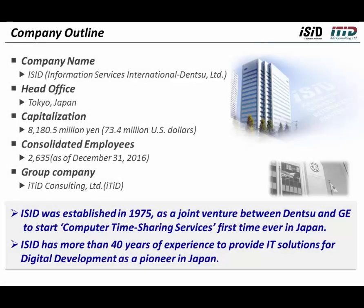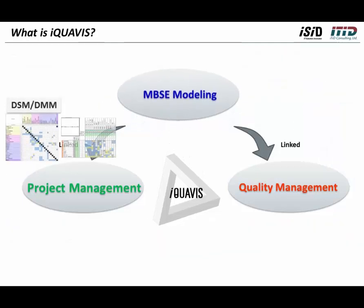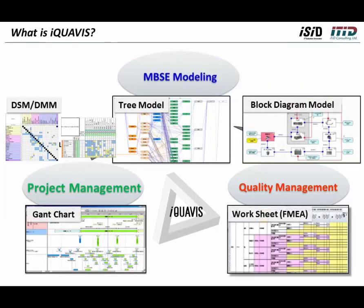Hello and welcome to the introduction of iQuaVis. ISID is an IT solution company based in Tokyo, Japan. ITID Consulting is one of its subsidiary companies. iQuaVis is one of the softwares we proudly develop at ISID and ITID. It is a unique tool which combines MBS e-modeling, project management, and quality management tools.